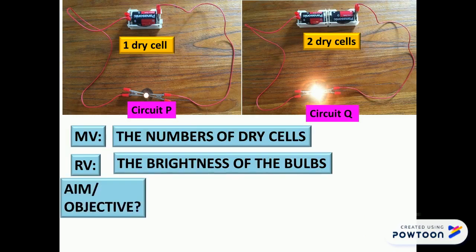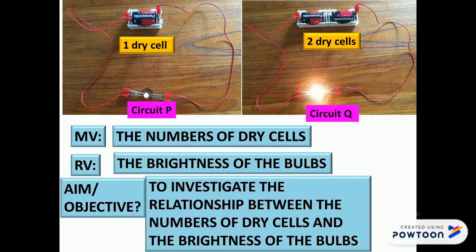So the aim or objective for this test is to investigate the relationship between the number of dry cells and the brightness of the bulbs.